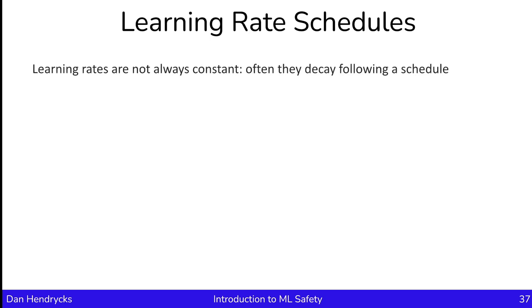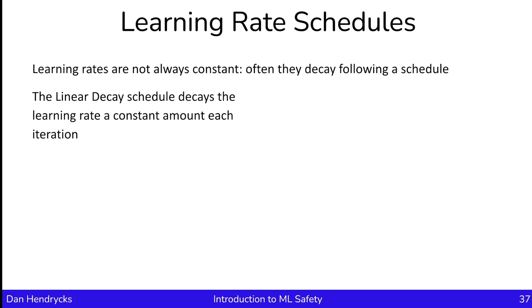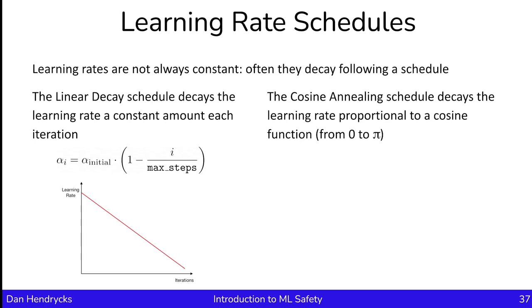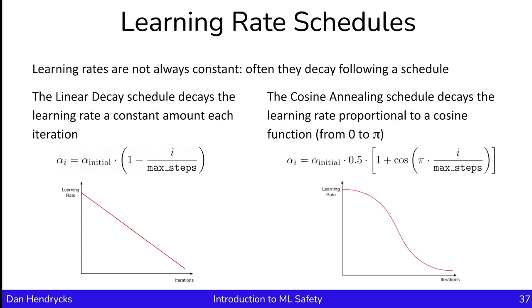Let's discuss learning rate schedulers. Learning rates are not always constant — they often decay following a schedule. The linear decay schedule decays the learning rate at a constant amount each iteration, decreasing from an initial rate down to a smaller value. Another very useful scheduler is cosine annealing, which decays the learning rate proportional to the cosine function from zero to pi — from an initial learning rate down to zero. Other schedulers include exponential decay and 1-over-square-root-of-steps decay, but in practice the cosine learning rate scheduler tends to work very well and reliably.